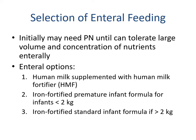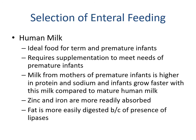For selection of enteral feeds, you may initially need parenteral nutrition with the goal of transitioning to enteral feeds, taking one to two weeks to establish tolerance. Options include human milk supplemented with human milk fortifier, iron-fortified premature infant formula for infants less than 2 kilograms, and iron-fortified standard infant formula for infants over 2 kilograms. Human milk is the ideal food for both term and premature infants, though it requires supplementation. Milk from mothers of premature infants is higher in protein and sodium, and infants grow faster with this milk.